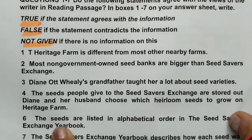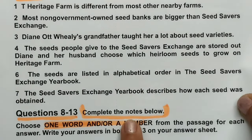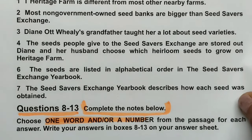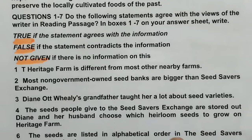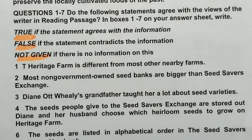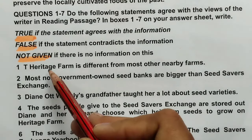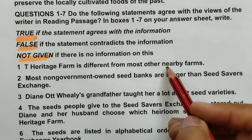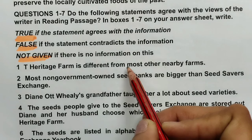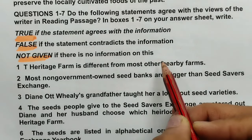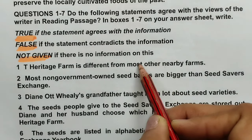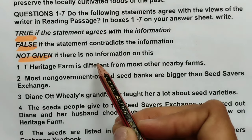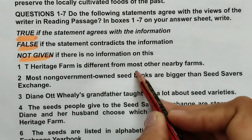The first type of question is True/False/Not Given. The second type of question is 'complete the notes below' with instructions specifying one word and a number. Let's start with True/False/Not Given. I will follow the keyword strategy. How to do True/False/Not Given: read the question statement, try to understand its meaning, and come out with one or two keywords. Those keywords will take us to the location whilst reading.